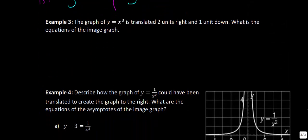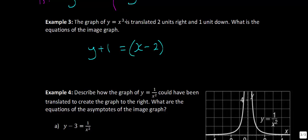Example 3 says: the graph of y equals x cubed — a cubic function — is translated two units to the right and one unit down. What is the equation of the image graph? Going one unit down, we do the opposite and write y plus 1. Going two units to the right, we write x minus 2. So the equation is y plus 1 equals x minus 2, all cubed.